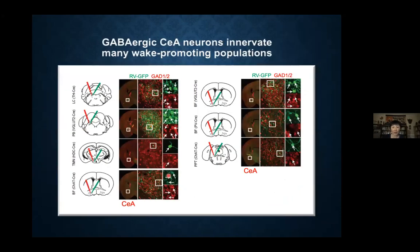In each of the seven panels, showing an example tracing from each of the seven wake-promoting populations targeted, if you zoom into the white square, you can see green rabies-labeled cells that overlap with the GABAergic marker, GAD1 or 2. We needed to know what these GABAergic neurons are, because the CEA is associated with fear learning and has been shown to be incredibly diverse functionally — so we had to figure out what the subset is.